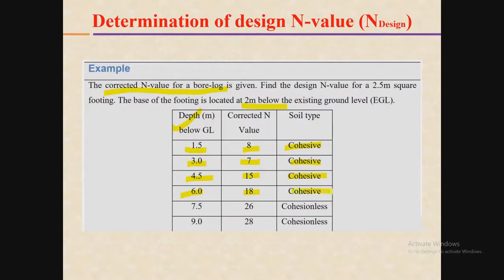You can see the soil type changes at a depth of 7.5 meters, where the N value is 26 but the soil type is cohesionless. Again, at a depth of 9 meters, the N value is 28 and the soil type is also cohesionless.